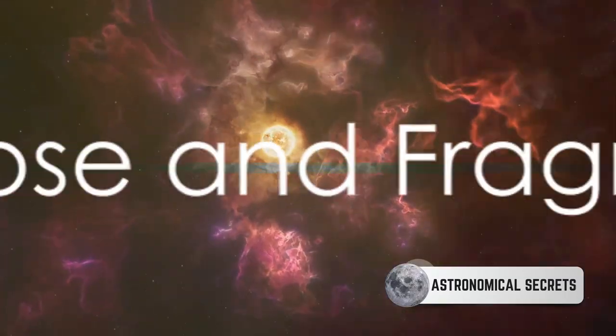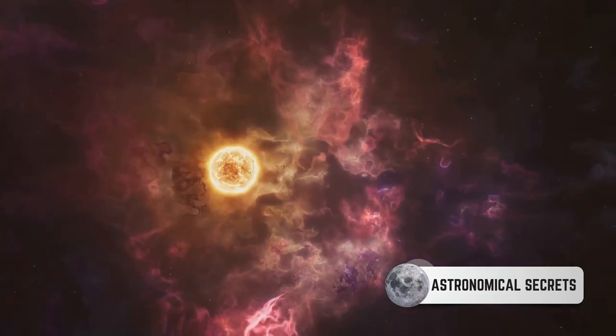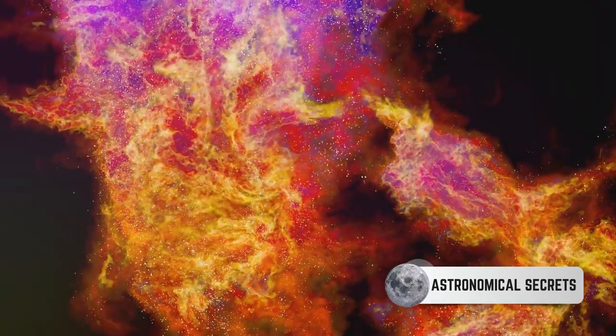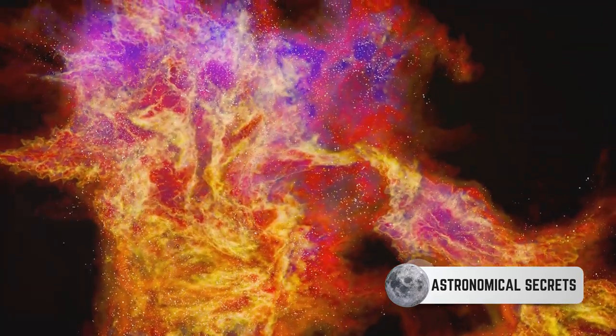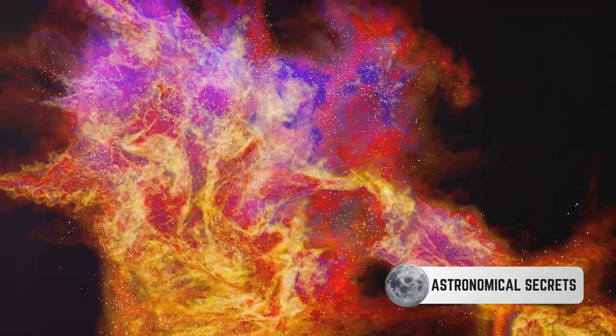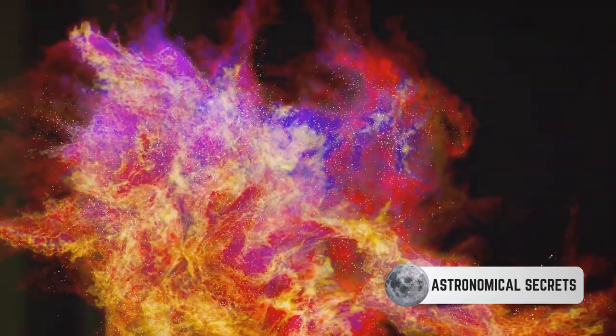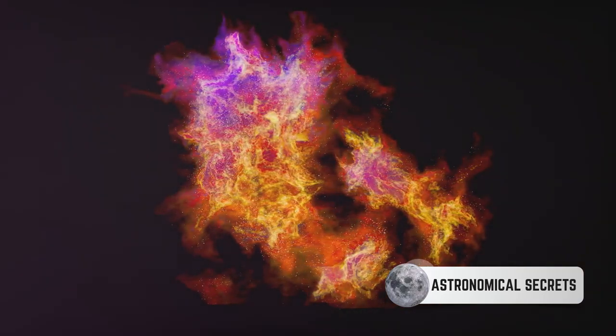Let's delve deeper. The collapse of a giant molecular cloud, or GMC, is not a uniform process. It fragments, it breaks apart, forming what we call protostars. Imagine a colossal cloud of gas and dust in the vastness of space. This cloud does not collapse uniformly. Instead, it fragments due to the inherent instabilities within it. Each of these fragments, often hundreds of times the mass of our sun, will then begin to collapse under its own gravity.